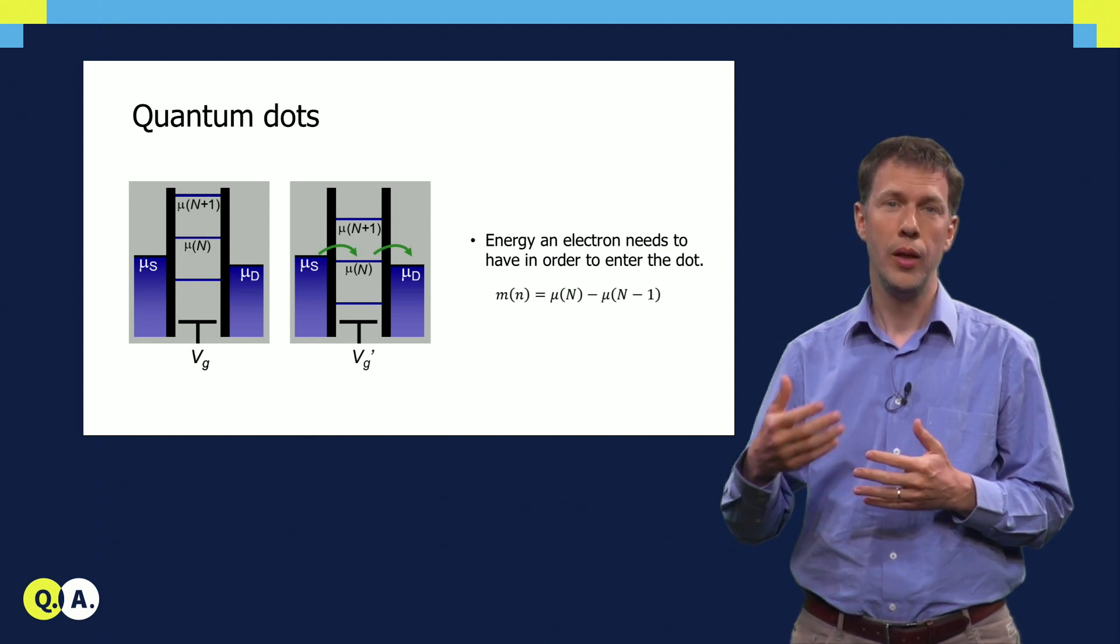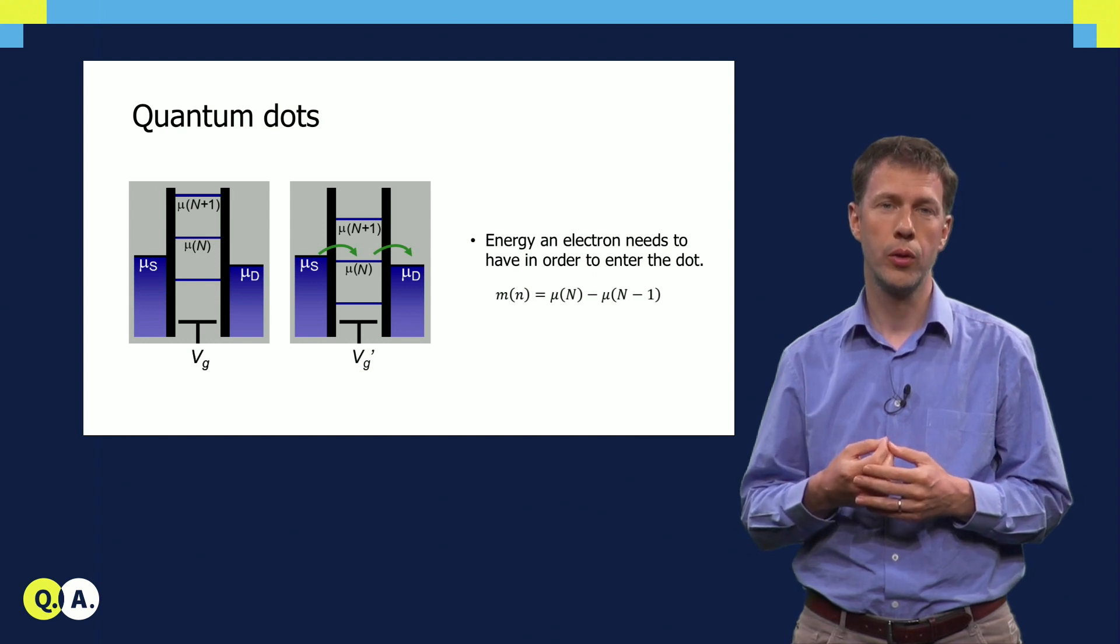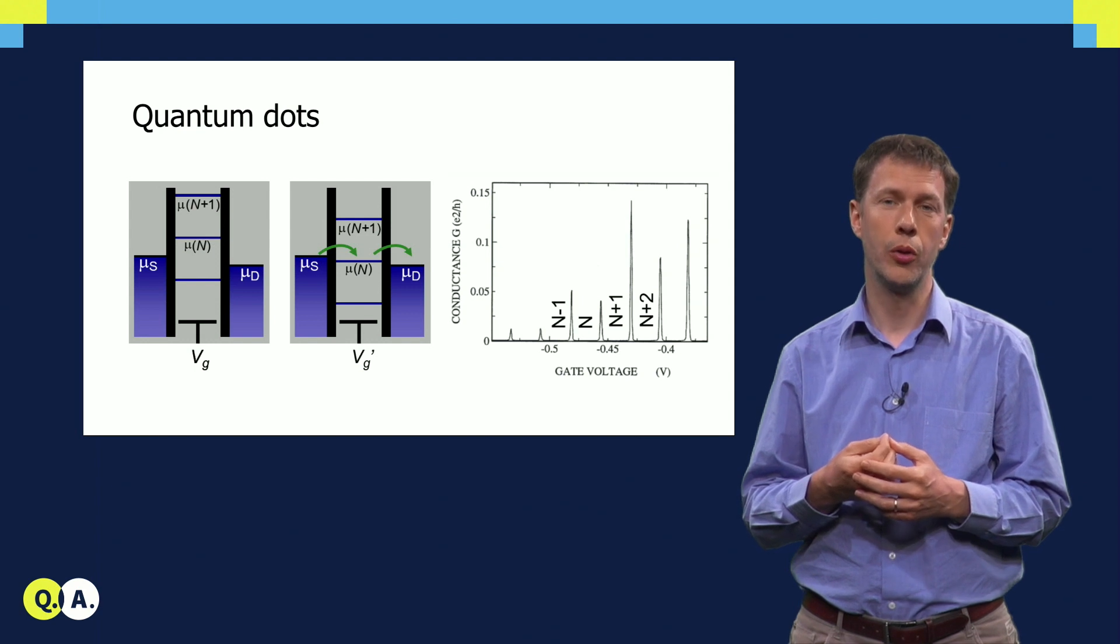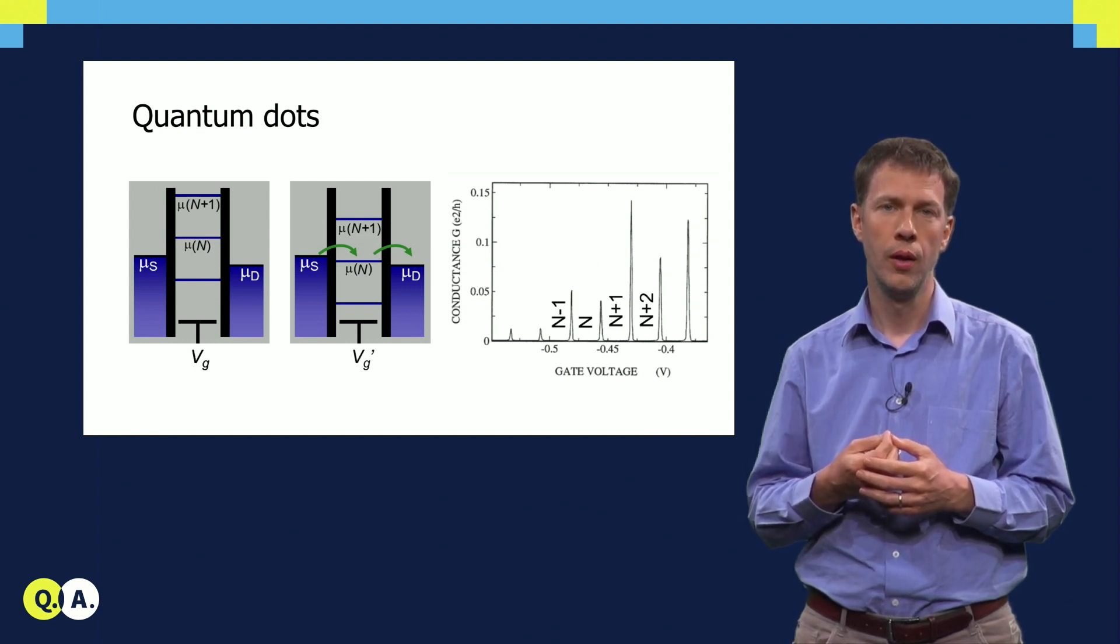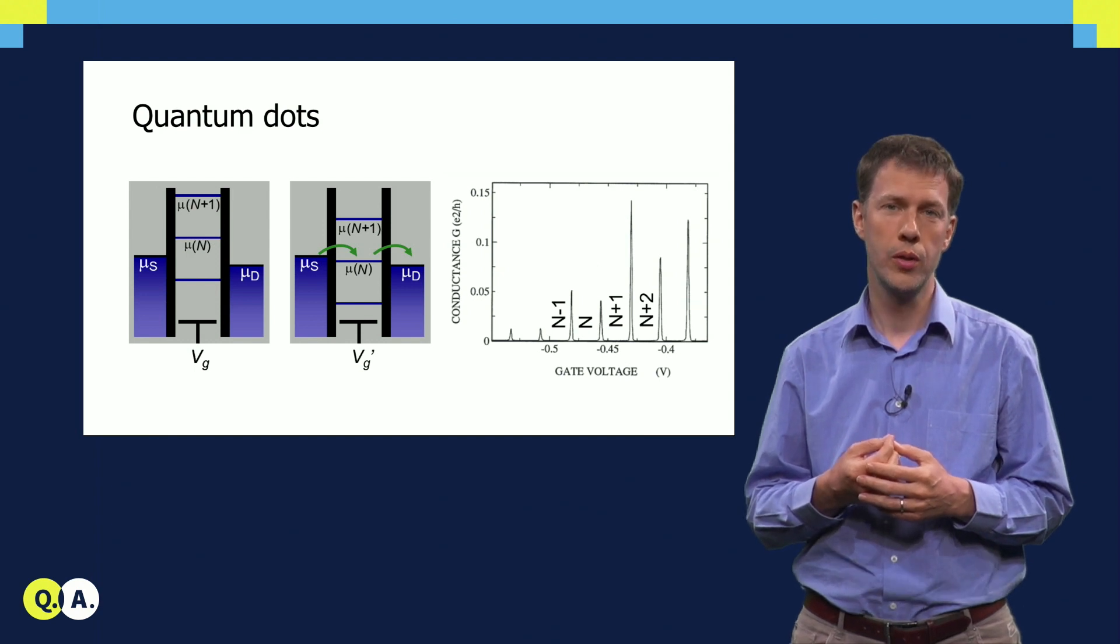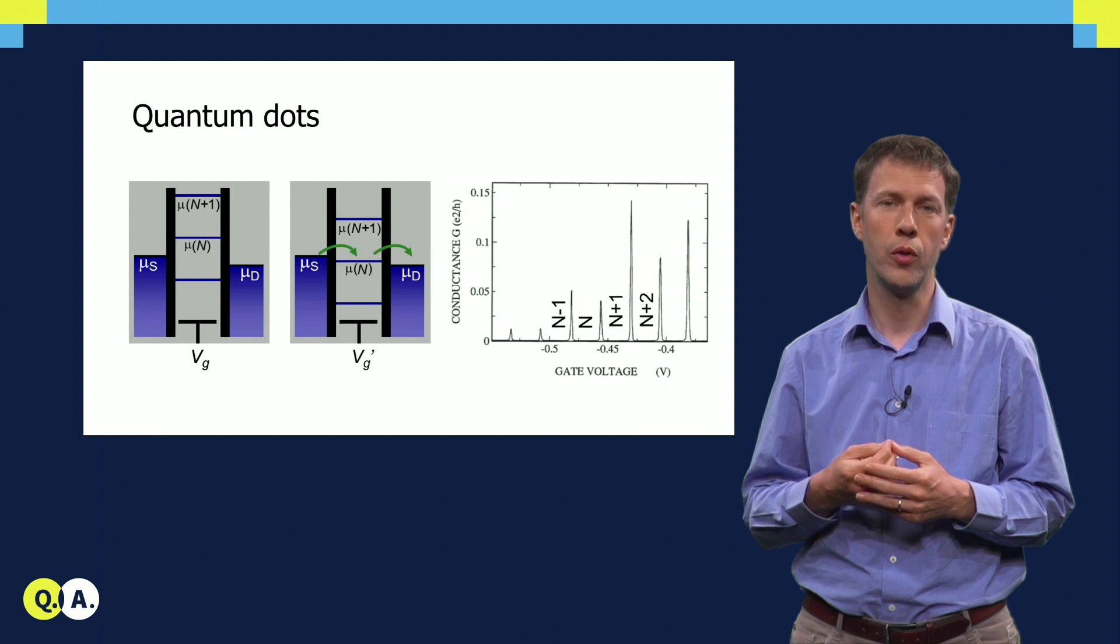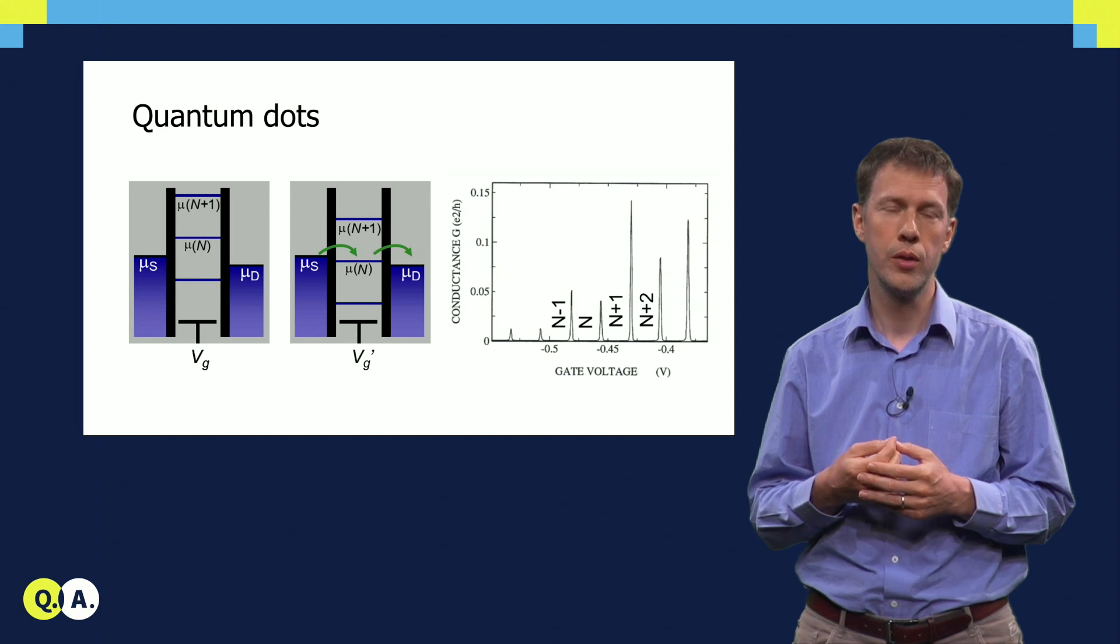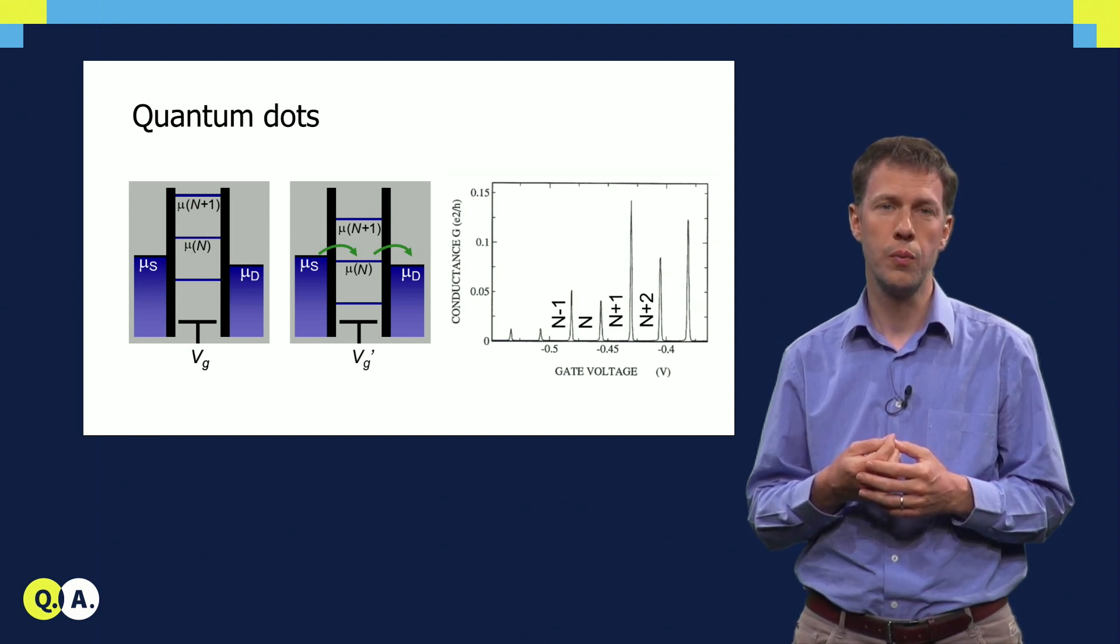But altogether, these many electrons moving through one by one do produce a measurable current. The current flows whenever the electrochemical potential lies within this bias window between source and drain, and we see this beautifully in measurements as sharp peaks in the conductance, or current, through the quantum dot, for specific voltages, where we have reached an alignment as shown in the schematic on the right. And for the intermediate gate voltages, the current is blocked.